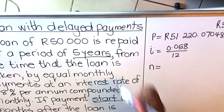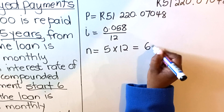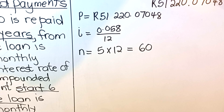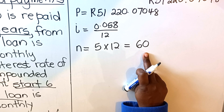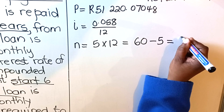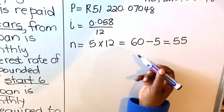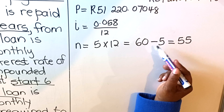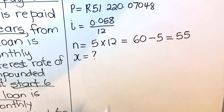For Grade 12, n is the number of payments. They said you pay over five years, so that's 5 × 12 = 60 payments. But you have already skipped five months, so if you paid 60 payments it would actually be five years and five months. That's why you subtract five months — your actual number of payments is 55. Your monthly payment will be slightly higher because the five months of non-payment must be covered.